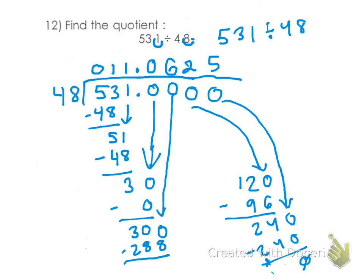So your final answer is 11.0625. And you would box that in. And that's it for question number 12.